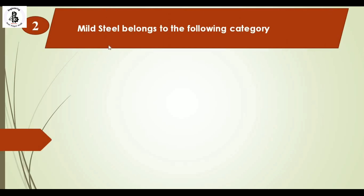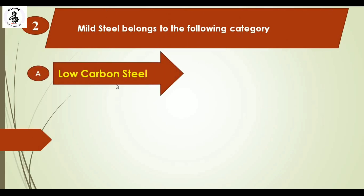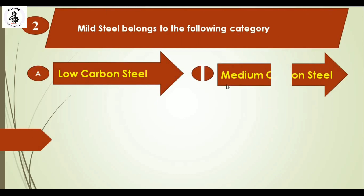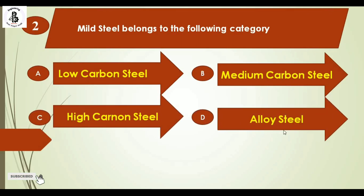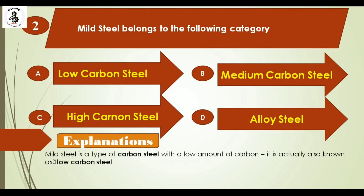Mild steel belongs to the following category: option A low carbon steel, option B medium carbon steel, option C high carbon steel, and option D alloy steel. Mild steel is a type of carbon steel with a low amount of carbon, so it is actually known as low carbon steel. The right answer is option A, low carbon steel.